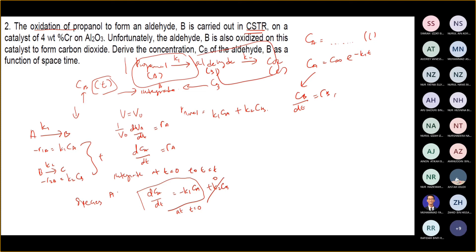In the first reaction, B is at the product side, so it should be a positive rate of reaction. In the second reaction, B is the reactant, so it becomes negative. So automatically, RB(net) = K1·CA minus K2·CB.